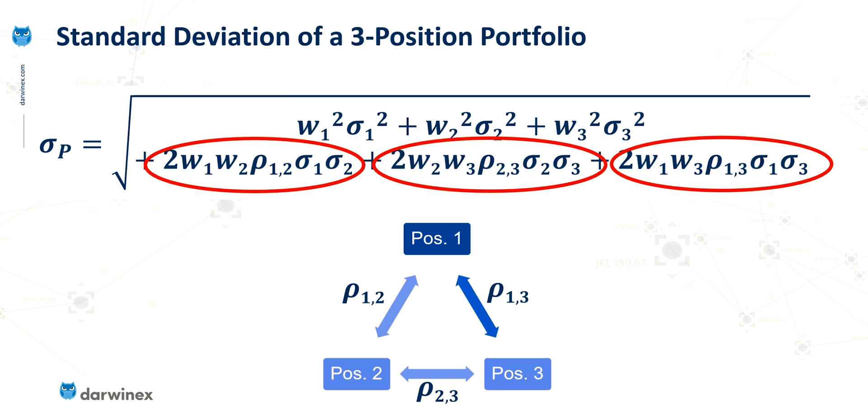And it just so happens that with three positions there are also three of these values. And you can see how these correlation coefficients fit in to each of the terms that we see. But again in terms of the principles behind these this is identical to the two position formula.